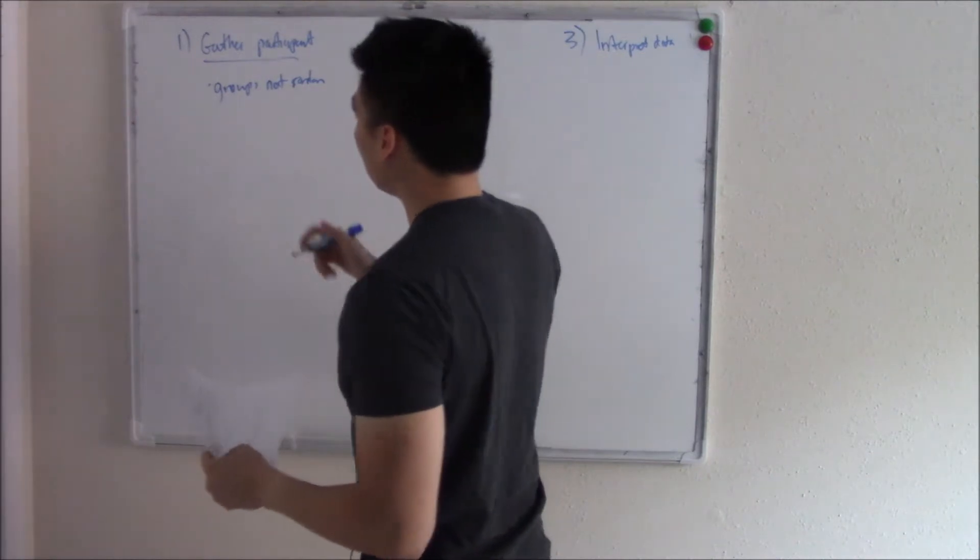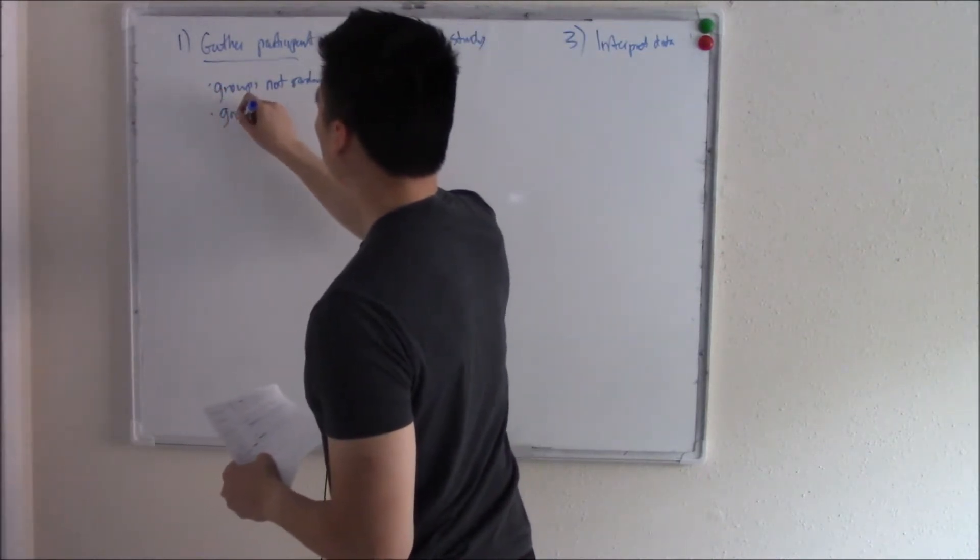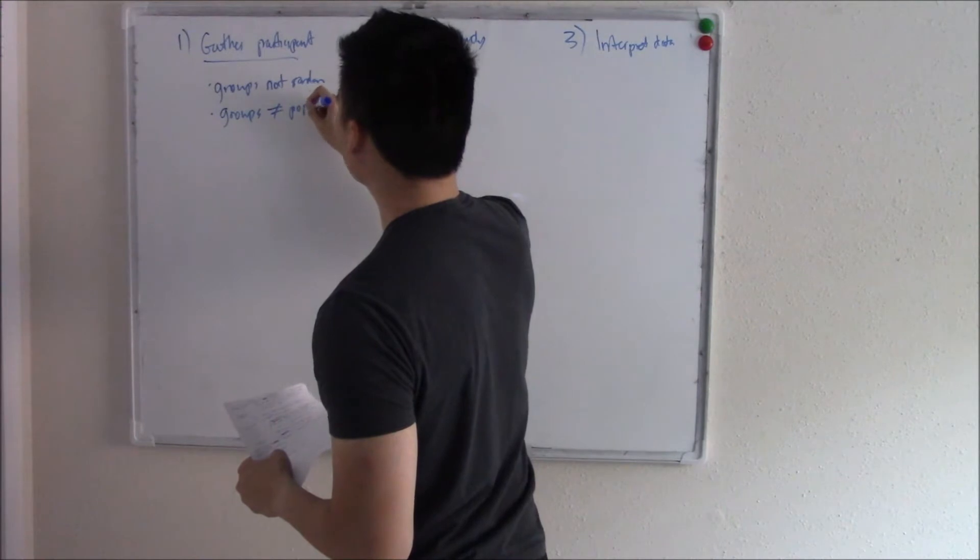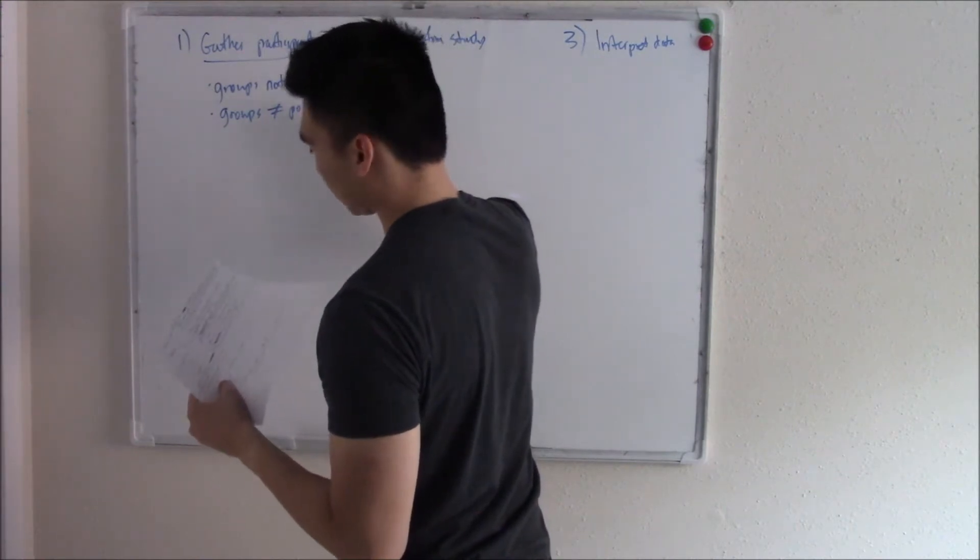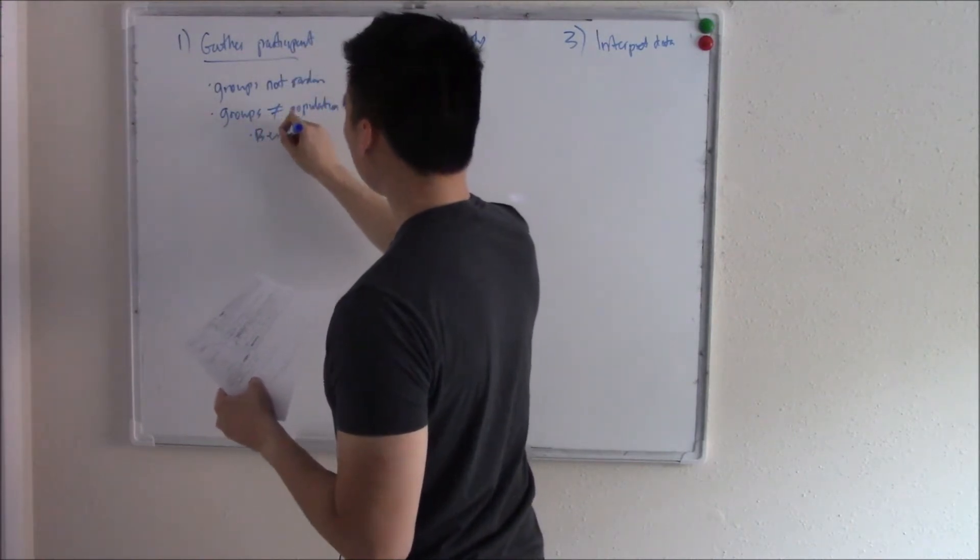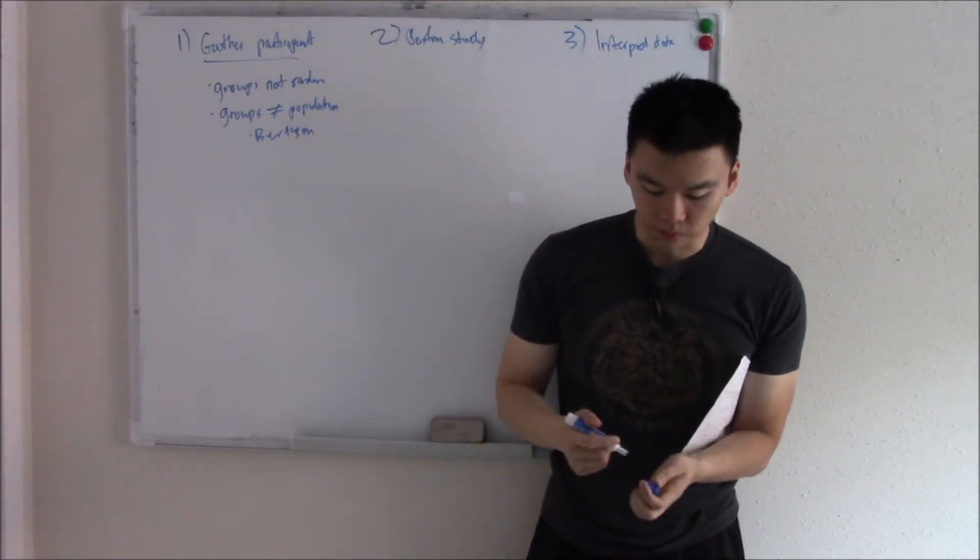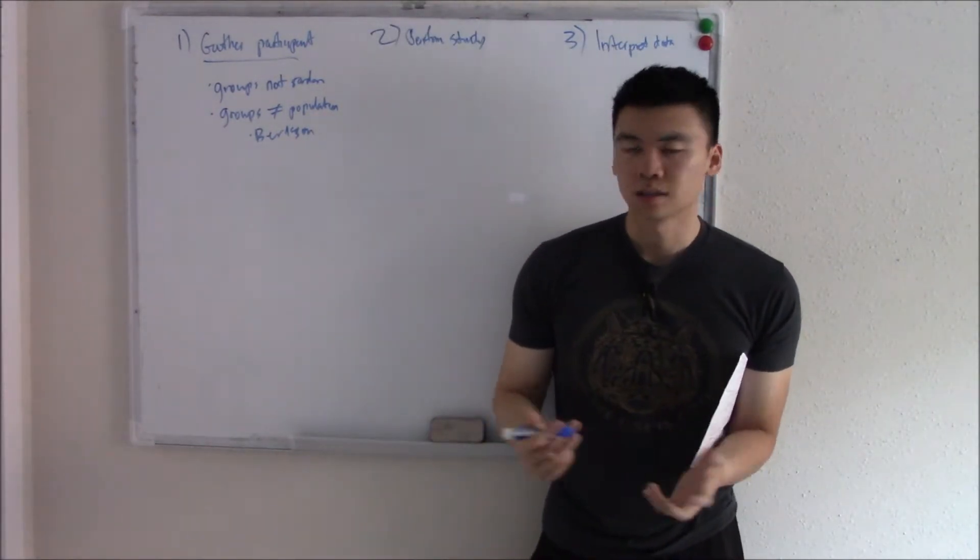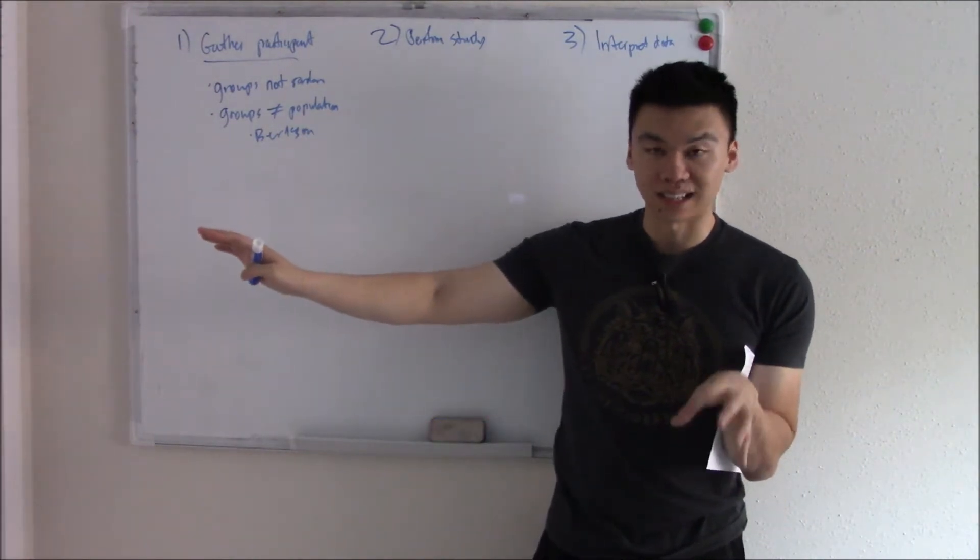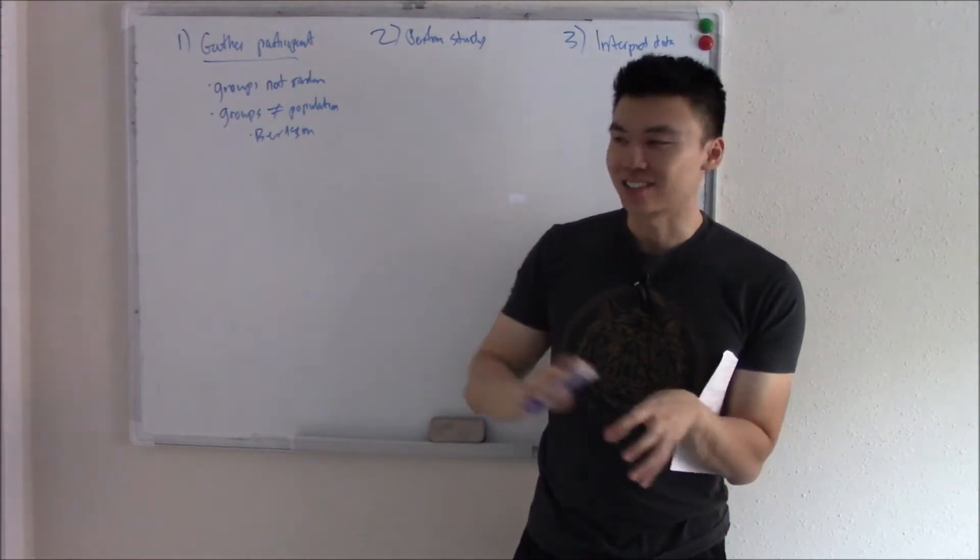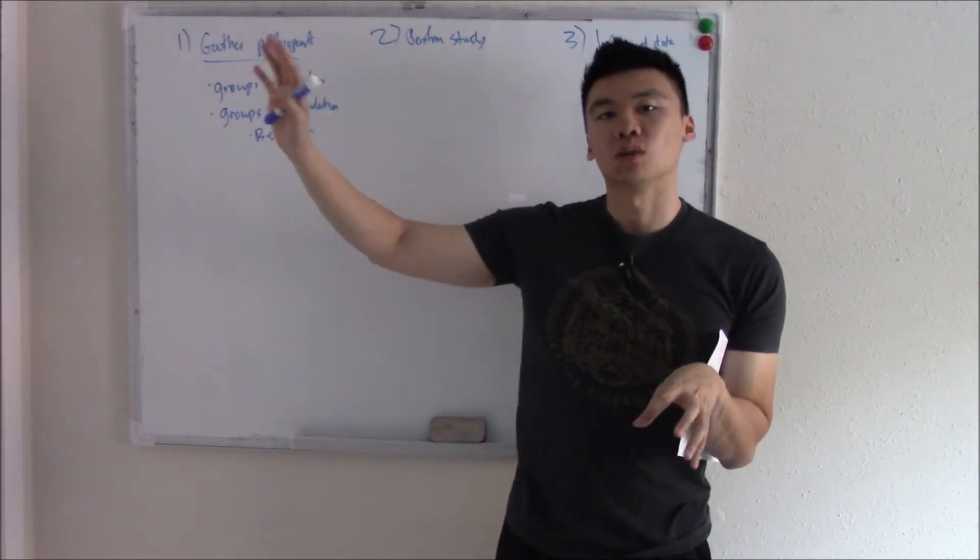Also, if the groups are not indicative of the general population, there's something called Berkson effect, where if you recruit a bunch of people from the hospital, people from the hospital are not indicative of the general population. People in the hospital are really sick. So that's not gonna translate to the general population.